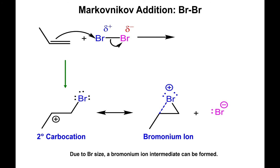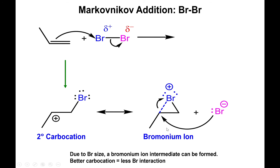The bromide formed in the first step is ready to attack, and the attack always takes place on the carbon that is most substituted — the one with the fewest hydrogens. Even though the bromonium interacts with both carbons, the interaction is weaker with the more substituted carbon for two reasons: that carbon is the better carbocation and doesn't need a strong interaction with bromine, and it also has greater steric strain, making bromine's approach more difficult.